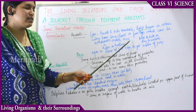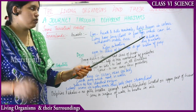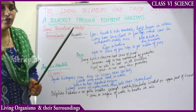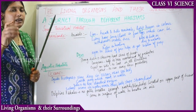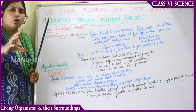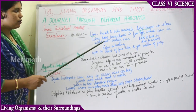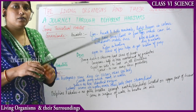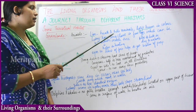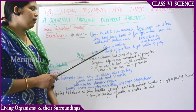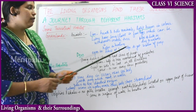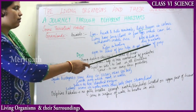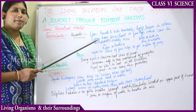The lion has long claws — nail-like structures on the front legs which can be withdrawn inside the toes. These claws help in hunting and tearing the animal's skin. Lions also have eyes positioned at the front, facing straight ahead, which helps them locate the prey they want to hunt. These are the adaptations of the lion.